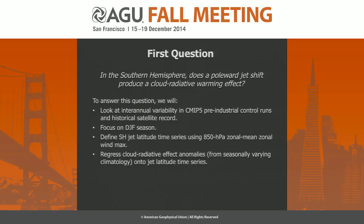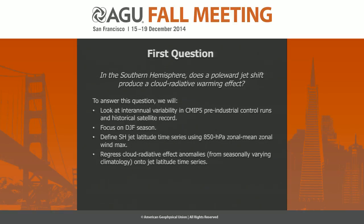For this talk, I'm going to focus only on the Southern Hemisphere summer when incoming sunlight is maximized. We're going to define the jet using lower tropospheric winds, and then regress the cloud radiative effect anomalies onto the jet latitude time series. This is a little different from what Dave Thompson showed earlier, in that we're not using the Southern Annular Mode. The reason we use this jet index is that in each model, the SAM shifts the jet by slightly a different amount, and we want to standardize all models so that we're comparing a one-degree jet shift across all of them.